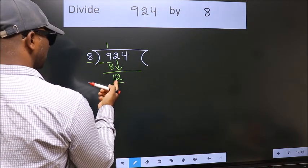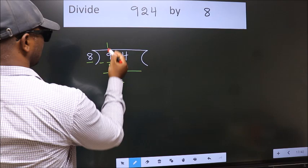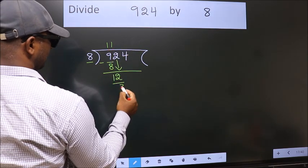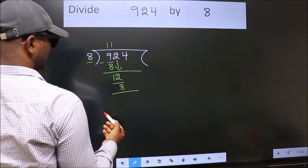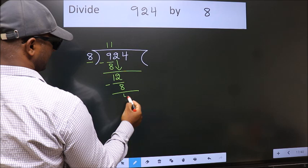A number close to 12 in 8 table is 8 once 8. Now, we subtract. We get 4.